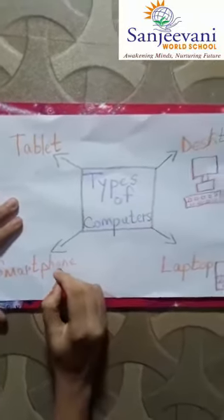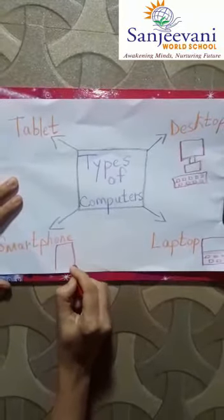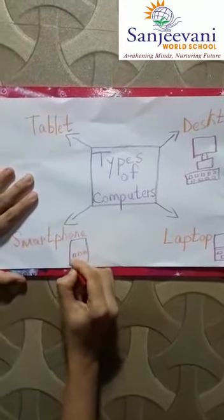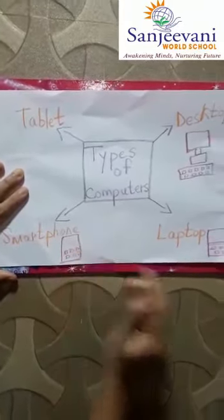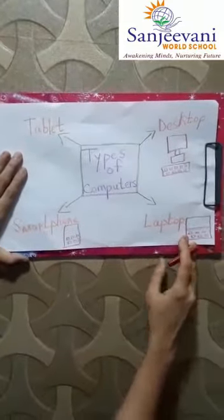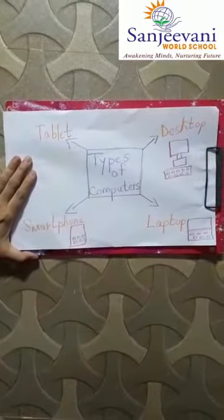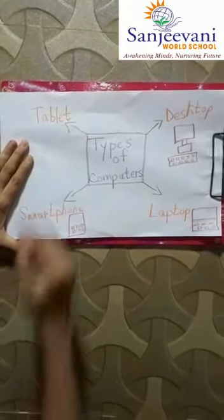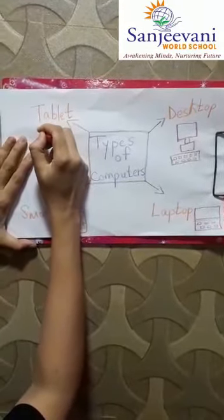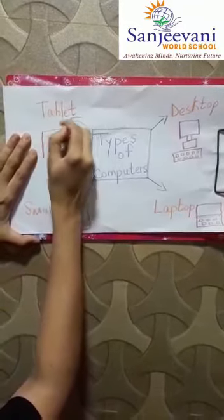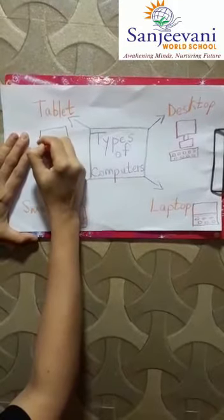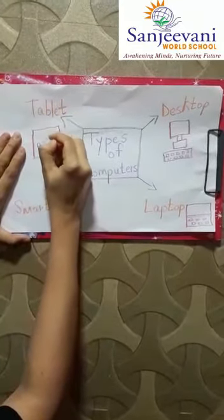Next we go to a smartphone — a mobile phone, a small one. Now next is a tablet. A tablet is a little smaller than a laptop and a little bigger than a mobile phone. Some tablets are of square shape, some are of rectangle shape.